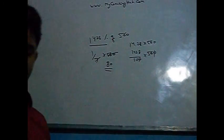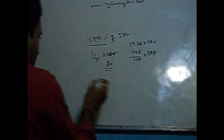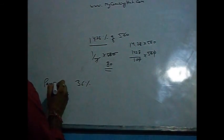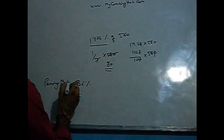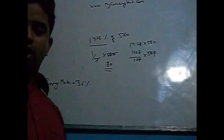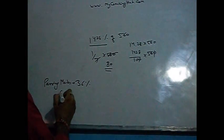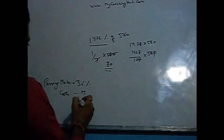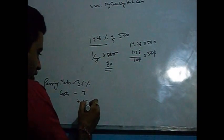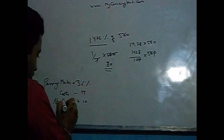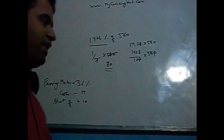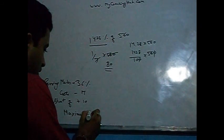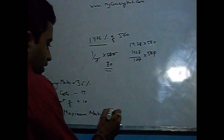In an exam, passing marks are 36%. A person gets 17 marks and fails by 10 marks. We have to find out what is the maximum marks in the test.